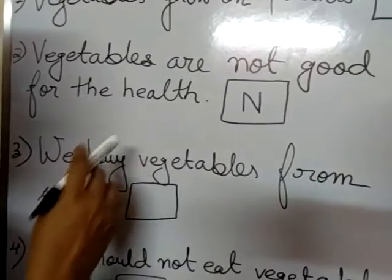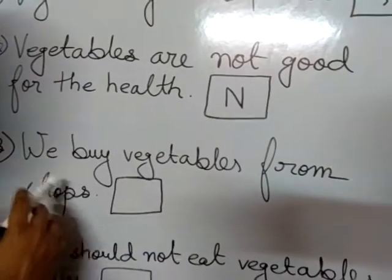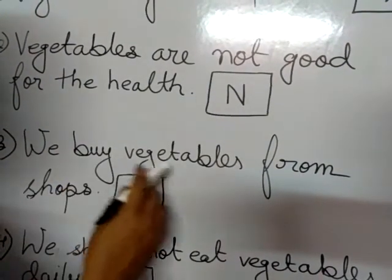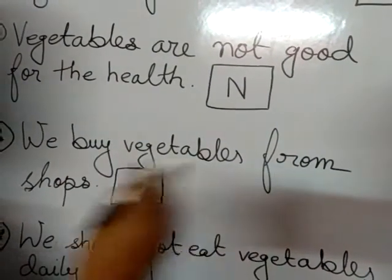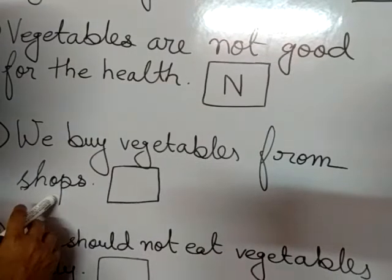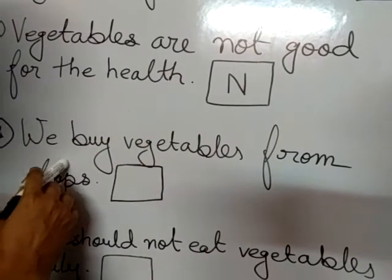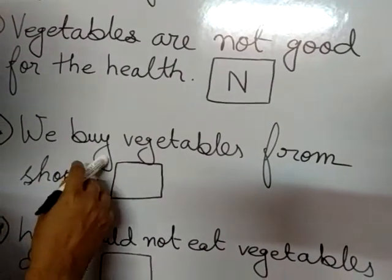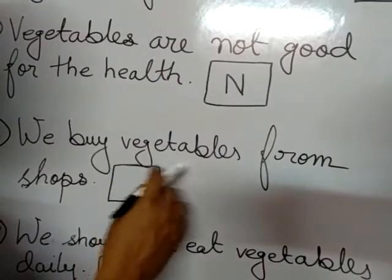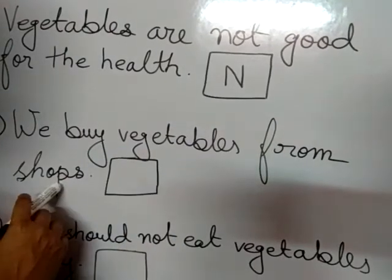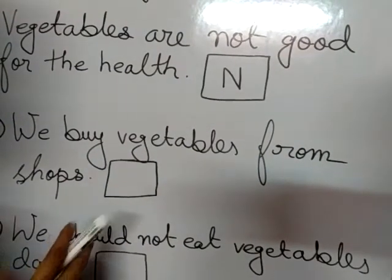Number three: We buy vegetables from shops. We buy vegetables from shops. Yes, that is correct.